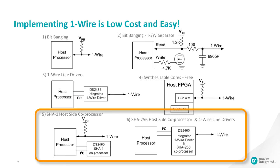Options 5 or 6 show the host-side implementation for a network that uses one or more one-wire secure memories, using the secure hash algorithm standard. The DS2460 is a SHA-1 coprocessor that primarily offloads the SHA-1 computation from the master.